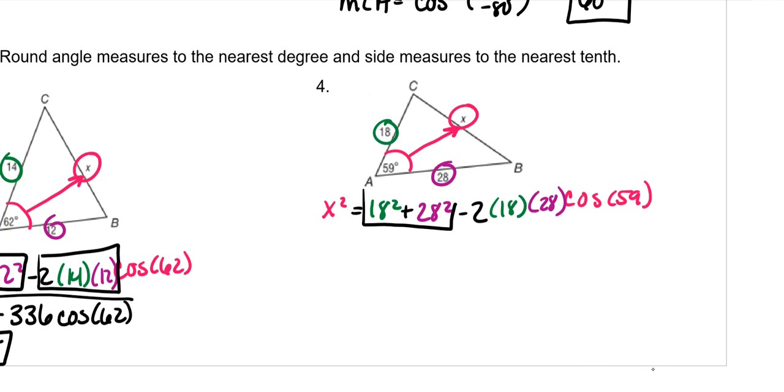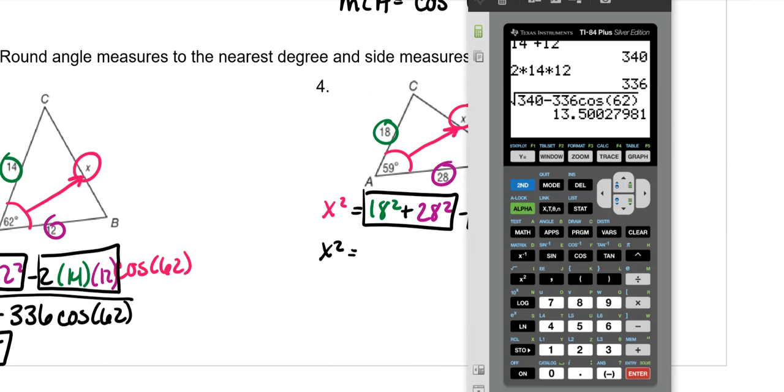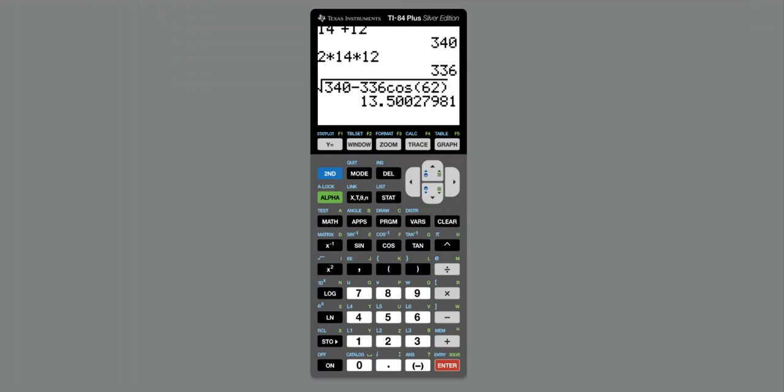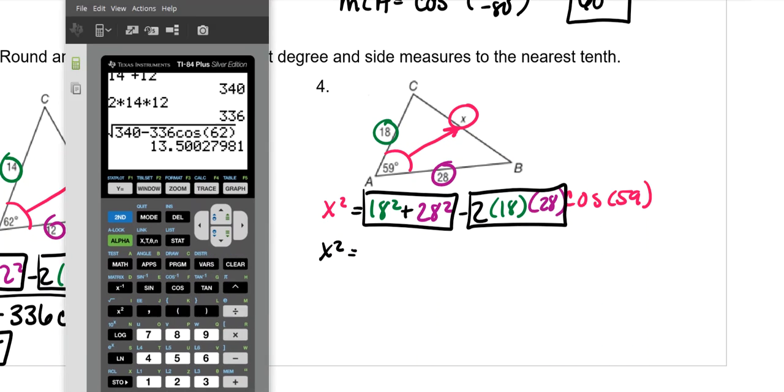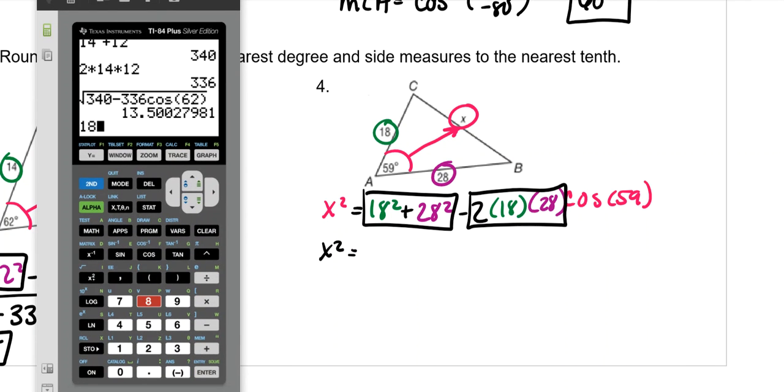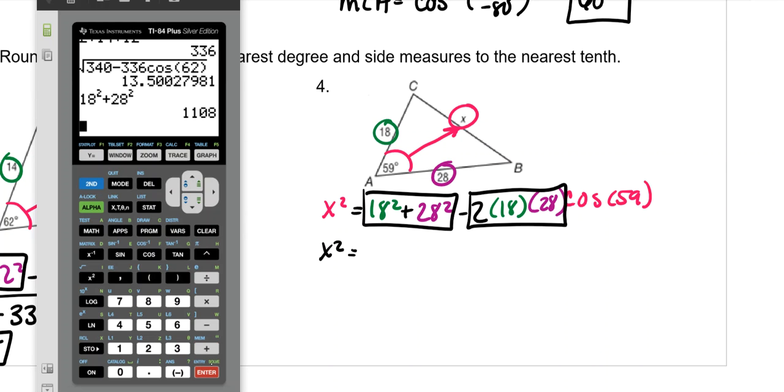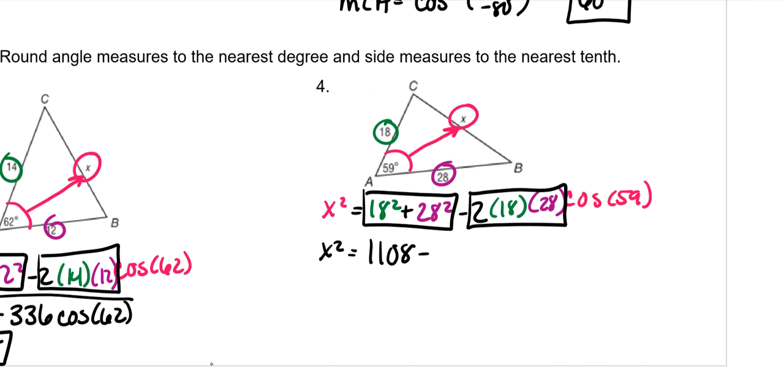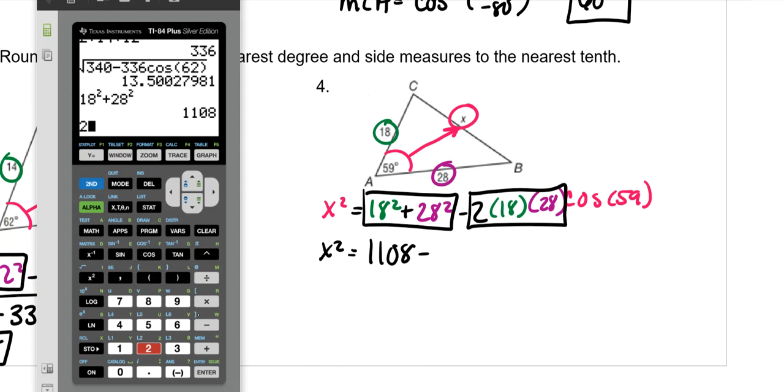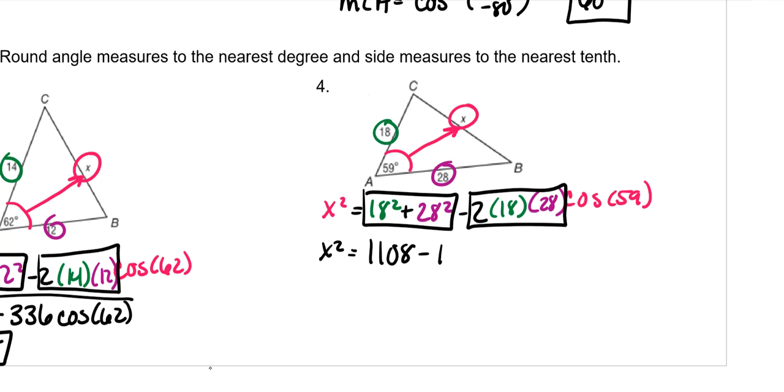So put this in a calculator first, this in a calculator first. 18 squared plus 28 squared is 1108 minus, and then we do 2 times 18 times 28, 1008, cosine of 59.